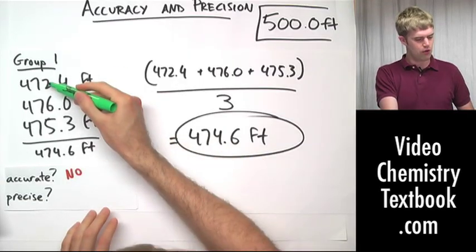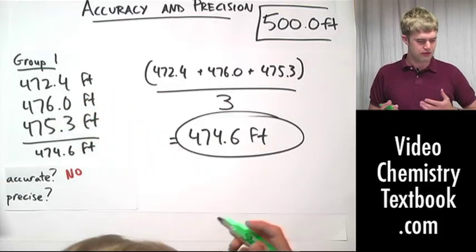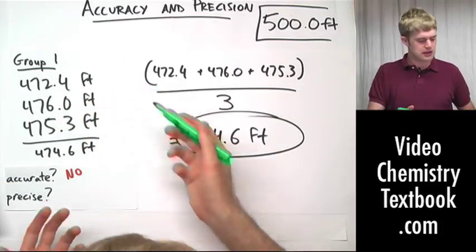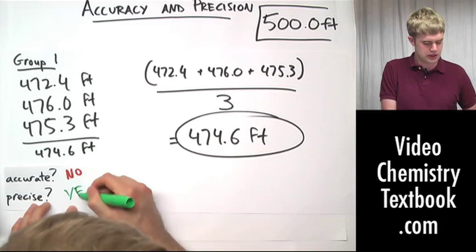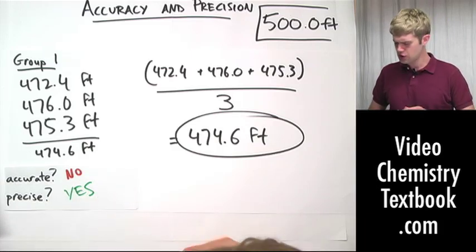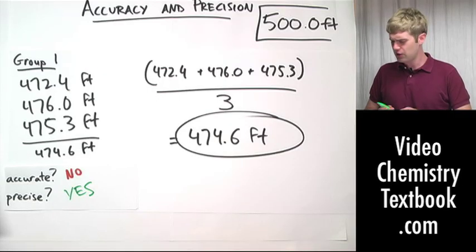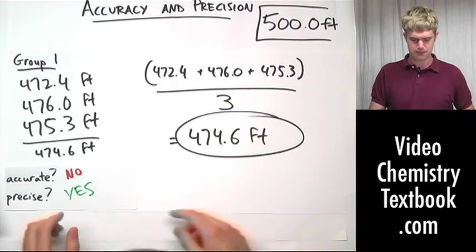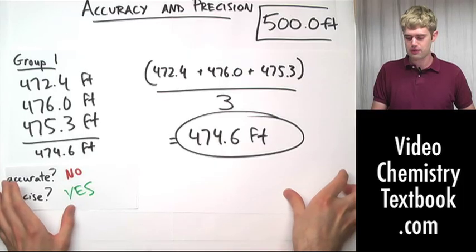Well, 474, 476, 475—precision is always relative, but I'd say that these are pretty precise. They're consistent with each other and close together. So group number one, accurate? No. They're way off from 500.0, but precise? Yeah, they're pretty precise.